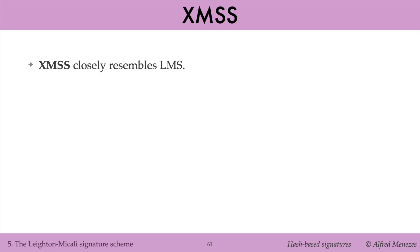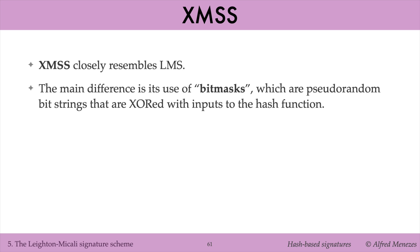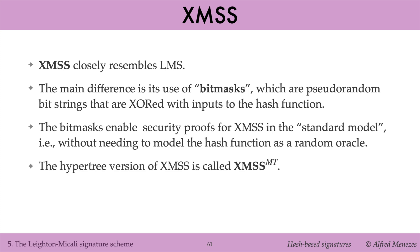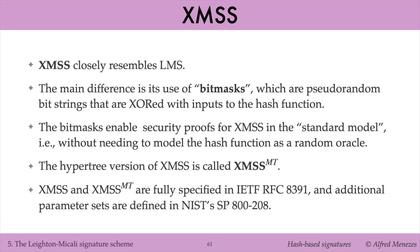XMSS is another standardized hash-based signature scheme that is very similar to LMS. Like LMS, XMSS is built on the Winternitz OTS and employs Merkle trees. The main difference between XMSS and LMS is the use in XMSS of bitmasks, which are XORed with hash function inputs. These bitmasks enable security proofs for XMSS without needing to model the hash function as a random oracle. The hyper-tree variant of XMSS is called XMSS multi-tree. Both XMSS and XMSS multi-tree are fully detailed in IETF's RFC 8391, with additional parameter sets provided in NIST's SP800-208 standard.